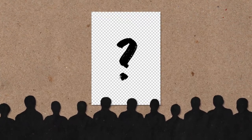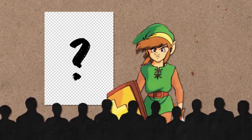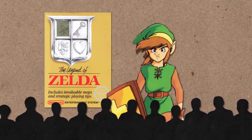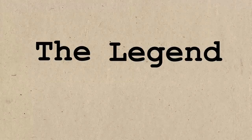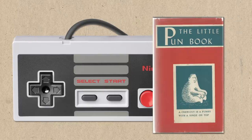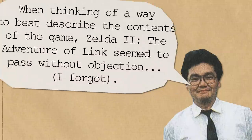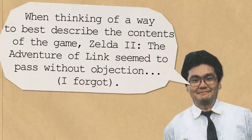As development neared the end, the team made a dramatic decision. Up until this point, the game was planned as a totally original game, not to be part of any pre-existing series. However, at the last minute, they decided the main character should be a 16-year-old Link from The Legend of Zelda instead, making this game a sequel to last year's game. The Legend of Zelda stood out as a title — rather than sounding like the name of a game, it sounded more like the name of a book. And so, the team decided to follow suit, titling their game Zelda 2: The Adventure of Link. According to Sugiyama, when thinking of a way to best describe the contents of the game, the name seemed to pass without objection.